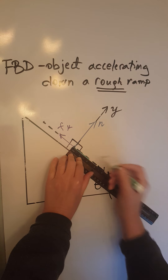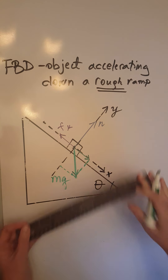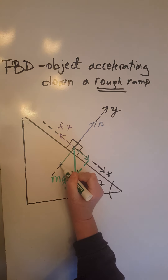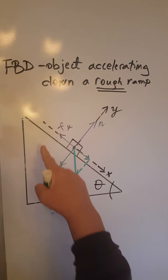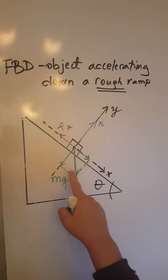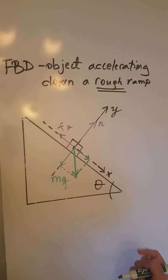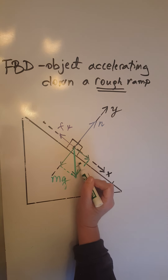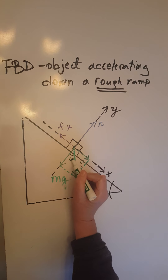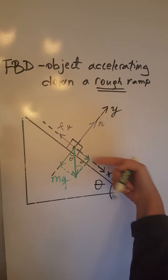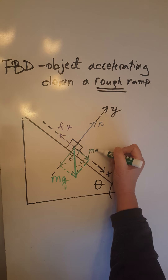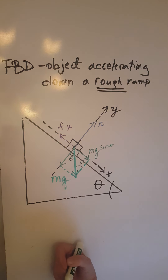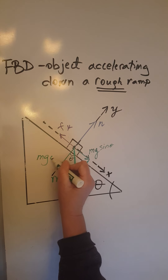The two components go: one down the ramp along the x-axis, and the other along the y-axis. This large right triangle is similar to the two smaller right triangles, so the angle theta here is congruent to theta in each smaller triangle. Therefore, the x-component of mg is mg sine theta, and the y-component of mg is mg cosine theta.